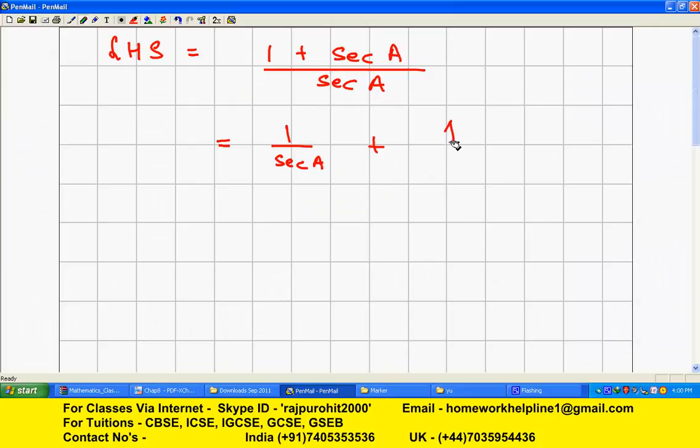That will become: 1/sec A is the reciprocal of cos A, so this becomes cos A + 1. I have simplified LHS.